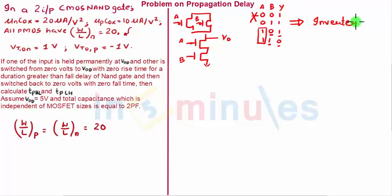If one of the inputs is held at VDD, then NAND behaves like an inverter. So that's the first thing which we could decode. Let's go ahead: if one of the inputs is held permanently at VDD and the other is switched from zero volts to VDD.